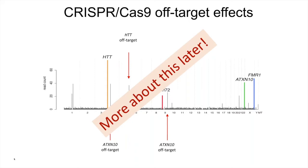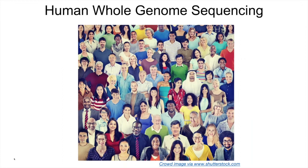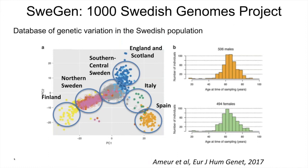First I would like to mention some work we are doing when it comes to sequencing whole human genomes. Right now I've been talking about looking at specific regions, but we are also involved in sequencing entire genomes. One project I've been working on for a long time is the SweGen project, where we have established a database with genetic information from 1,000 Swedish individuals.